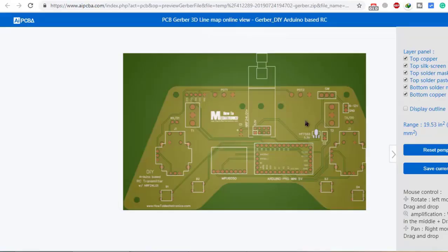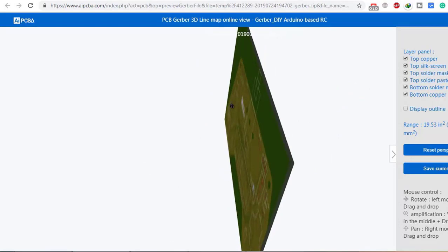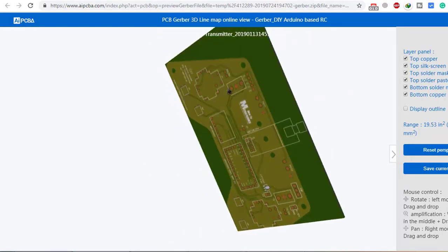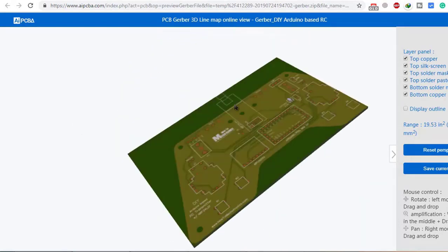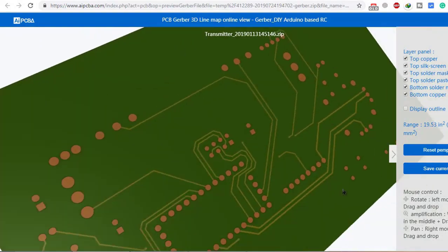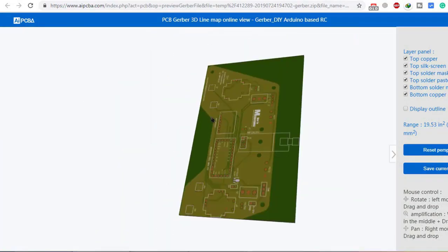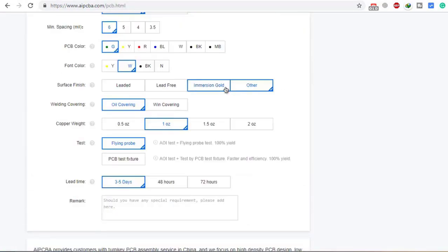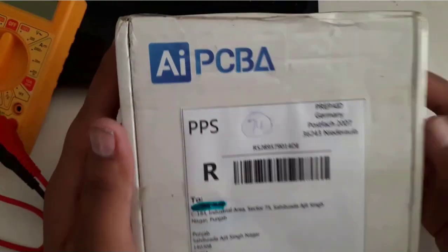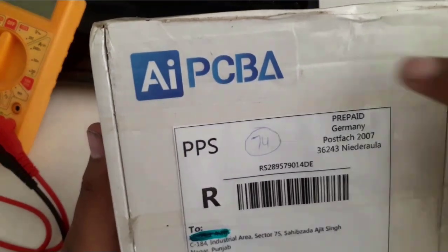Here you can see the PCB view - this is the back view and this is the front view. You can also see the thickness. Simply upload the Gerber file, fill the details, and then order. I received the PCB from AI PCBA within seven days.